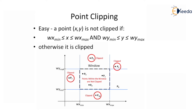So the points p7, p10, p2, p8, and p4 are clipped points. While p1, p9, and p5 — the points within the window — are retained and are not clipped.